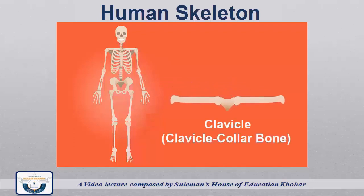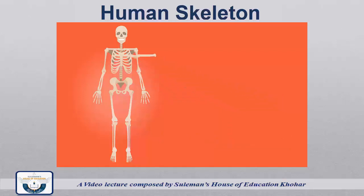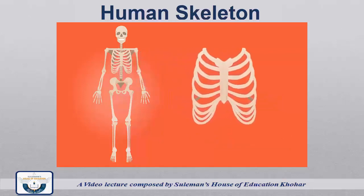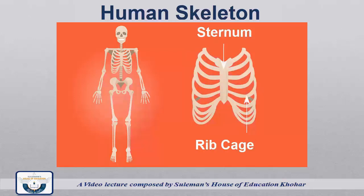Clavicle, also known as the collar bone. Sternum and ribcage: the sternum is a flat bone which is 7 cm long, located in the median part of the chest wall.